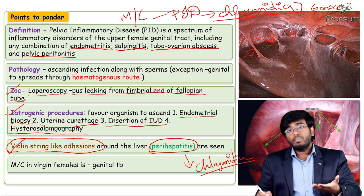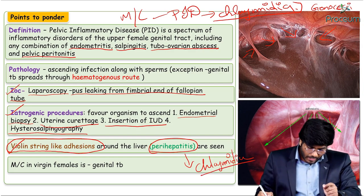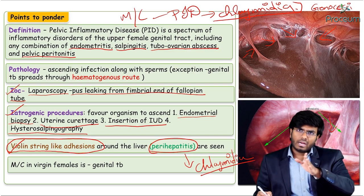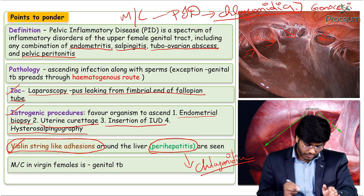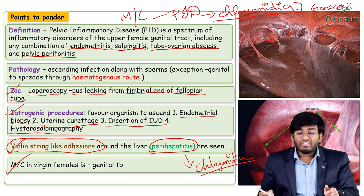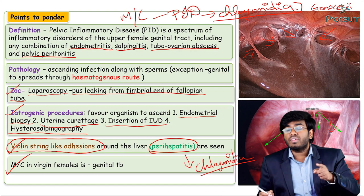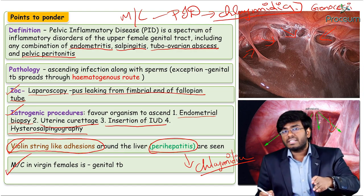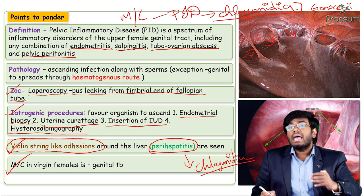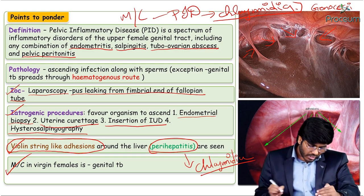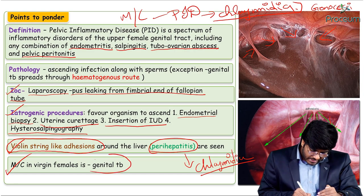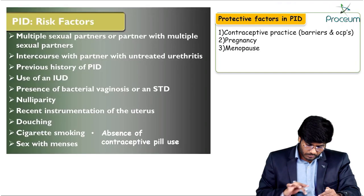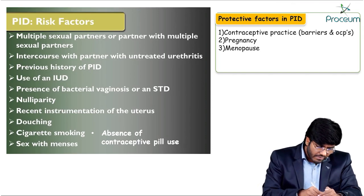This perihepatitis resulting from PID — with violin string-like adhesions — is known as Fitz-Hugh-Curtis syndrome. Chlamydia is the most common cause. If a question specifically asks about the most common cause of PID in virgin females, the answer is genital tuberculosis, because Chlamydia and Gonorrhea are sexually transmitted diseases.